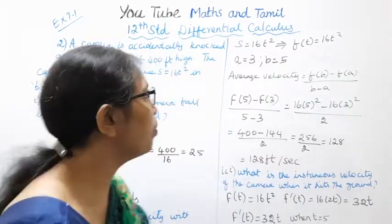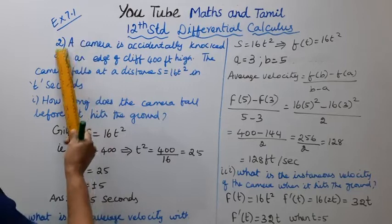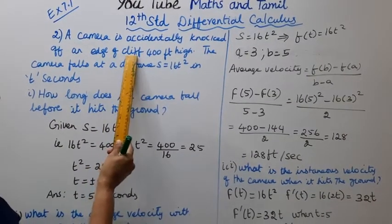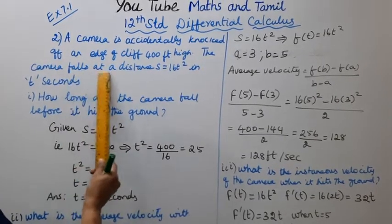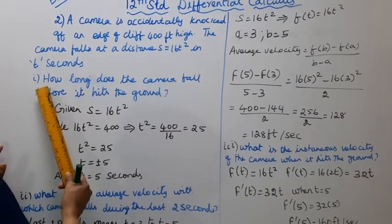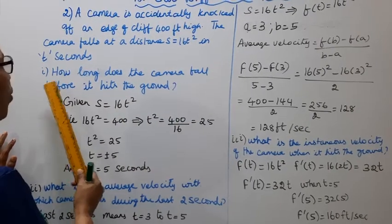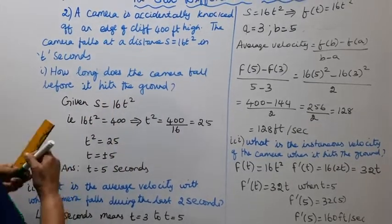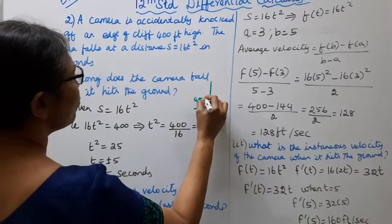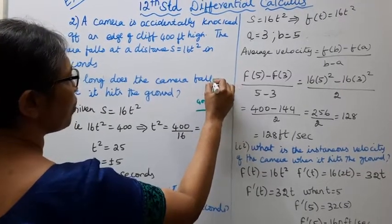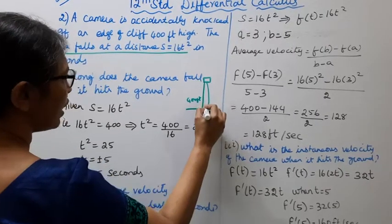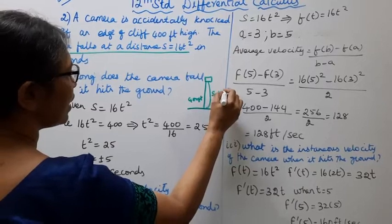Hello students, welcome to Max and Double channel. 12th standard Math, Differential Calculus, Exercise 7.1. A camera is accidentally knocked off the edge of a cliff 400 feet high. The camera falls at a distance s equal to 16t squared in t seconds. First sub-question: how long does the camera fall before it hits the ground?